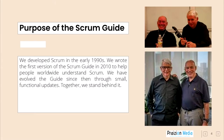Purpose of the Scrum Guide. We developed Scrum in the early 1990s. We wrote the first version of the Scrum Guide in 2010 to help people worldwide understand Scrum. We have evolved the guide since then through small functional updates. Together, we stand behind it.